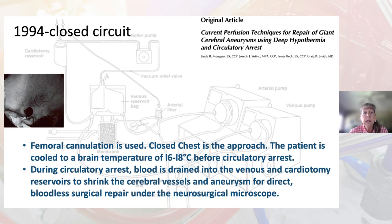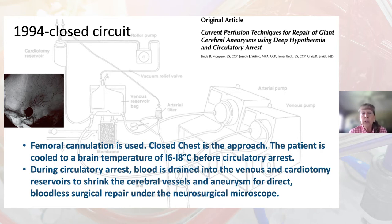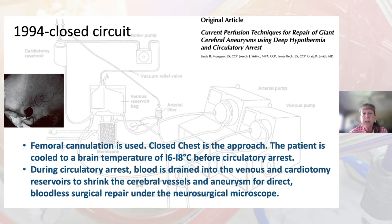In 1994, the original article "Current Perfusion Techniques for Repair of Giant Cerebral Aneurysms" described a circuit created for clipping giant cerebral aneurysms that were unable to be clipped under conventional methods. Femoral cannulation and a closed chest approach were used, and the patient was cooled to a brain temperature of 16 to 18 degrees before circulatory arrest. During arrest, blood is drained into the venous and cardiotomy reservoirs, enabling shrinkage of the cerebral vessels and aneurysm for direct bloodless surgical repair.